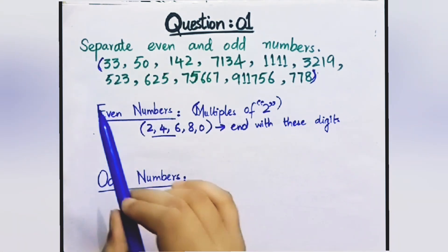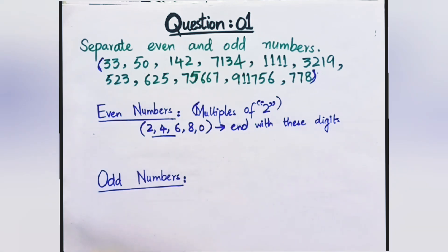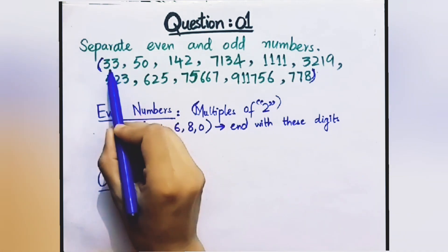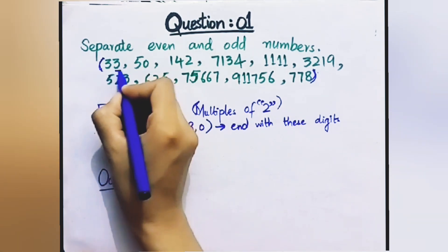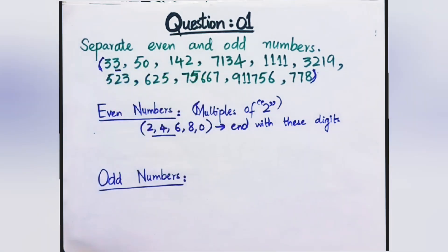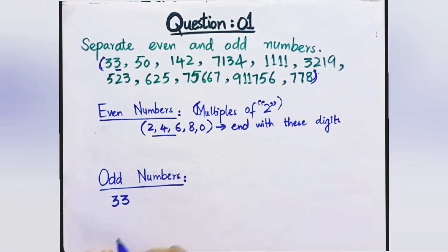Now let's separate this list. If the last digits are other numbers — for example 3, 5, 7, 9 — those are odd numbers. First number is 33. The last digit is 3, which is an odd number, so this will be an odd number.